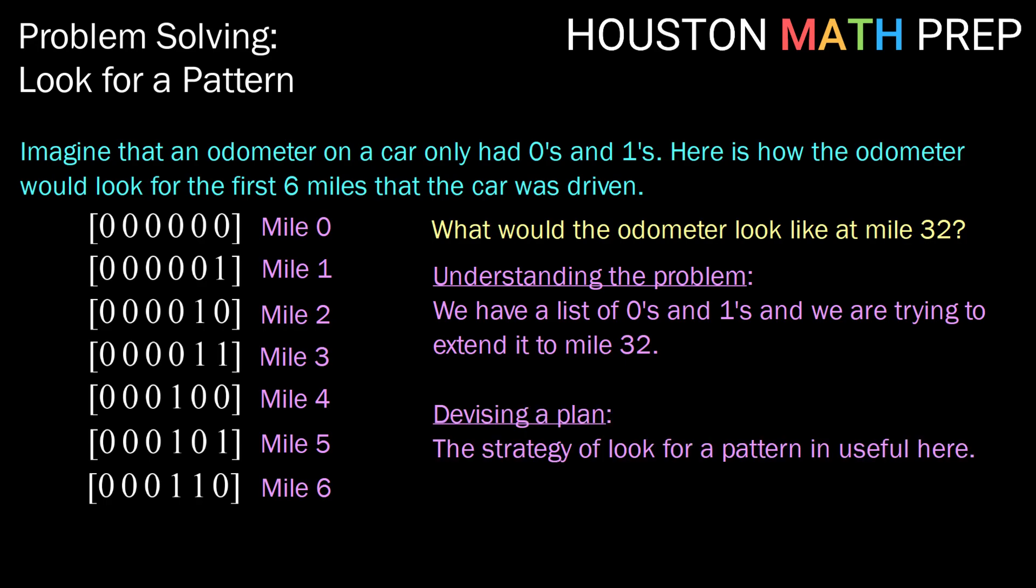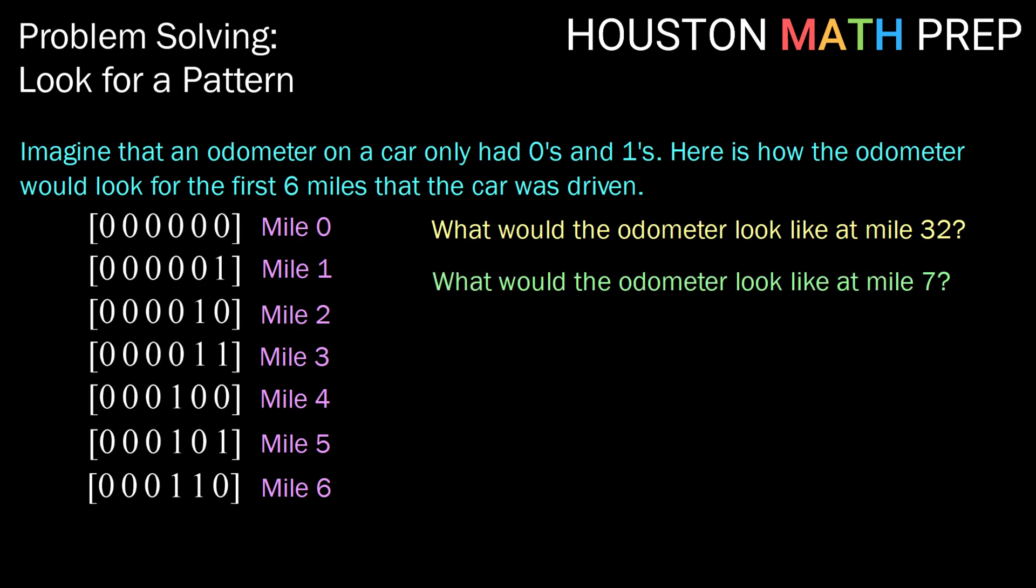As we devise a plan, the strategy of look for a pattern is going to be very useful here. So let's dig into step three, carrying out our plan. Let's see if we can extend the pattern just to the next mile marker. What would the odometer look like at mile seven? Well, at mile seven, we would have a one in the first, second, and third place, continuing the pattern that we've been shown here from zero to six.